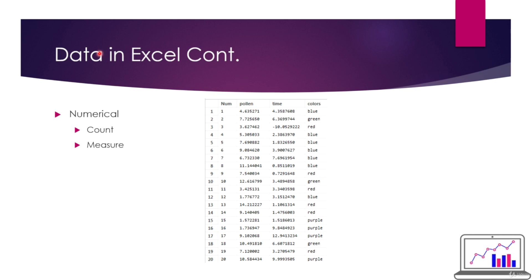Then you have numerical data, which is pretty much numbers. Ignore the categorical data for now - numerical data involves counting or measuring something. In this example, we're measuring the amount of pollen and the amount of time. Your numerical data could be anything from the number of cars sold, to the snacks in your bag, or even the number of times you sneeze per day. It can pretty much be anything.